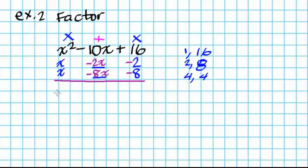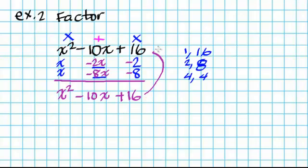So if I check this now: x times x gives me x squared. Negative 2x minus 8x is negative 10x. Negative 2 times negative 8 — a negative and a negative is a positive — gives me 16. I do get the same result, so that means I am factoring correctly.